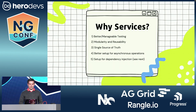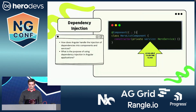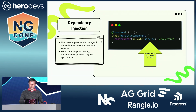And again, why services? Better manageable testing, modularity and reusability, a single source of truth, better setup for asynchronous operations, and setup for dependency injection. That segues into the last talk, which was really good. Dependency injection is amazing — I love being able to import your service into a component through dependency injection, and also that inject feature that we learned about.